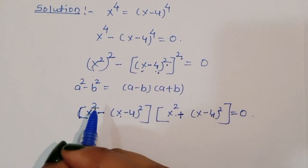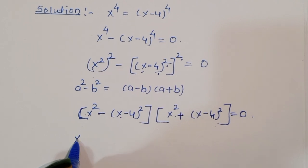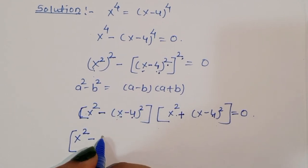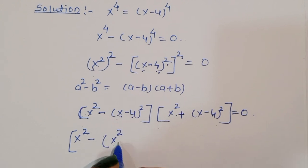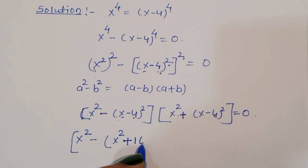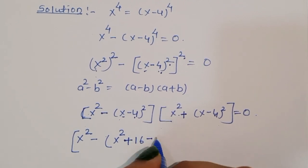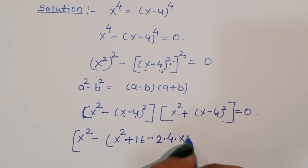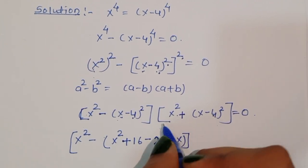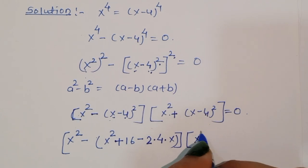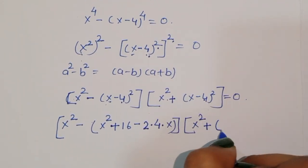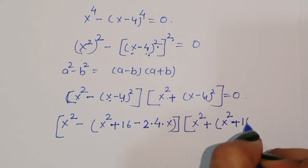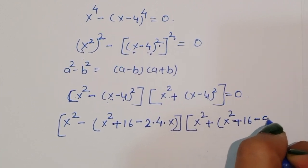Now expanding using the a minus b square formula: a minus b square equals a square plus b square minus 2ab. So x minus 4 square equals x square plus 16 minus 8x. We apply this expansion to both bracket terms: the first bracket becomes x square minus x square plus 16 minus 8x, and the second bracket becomes x square plus x square plus 16 minus 8x.